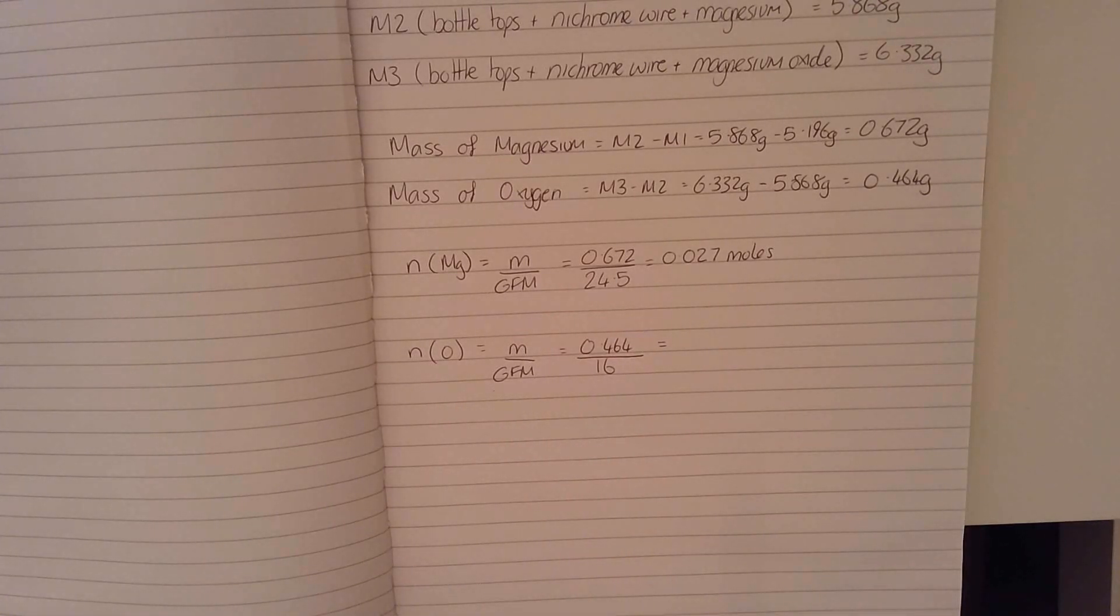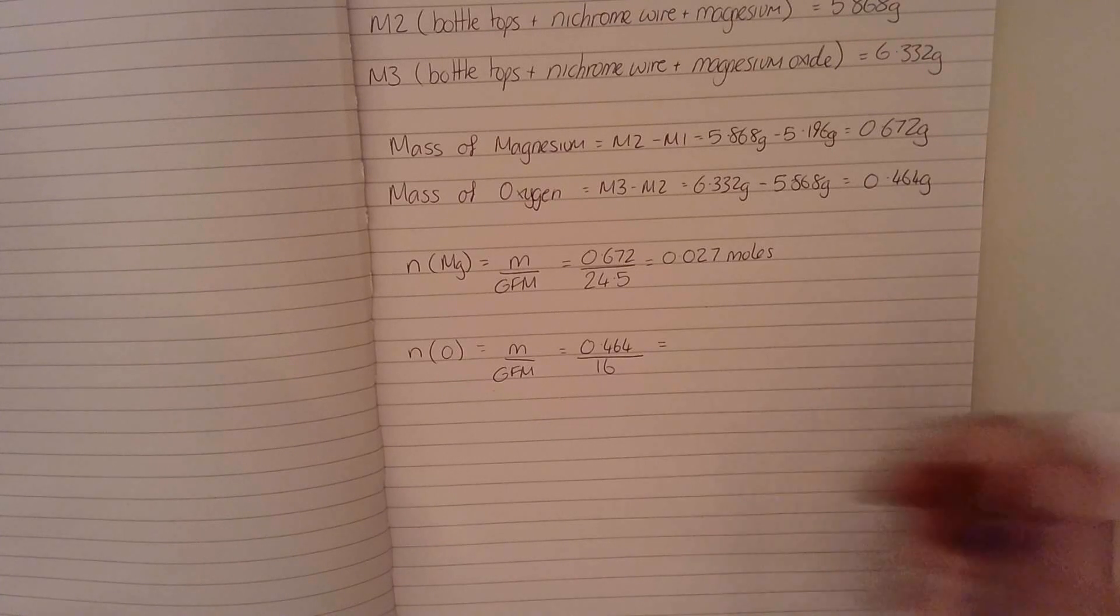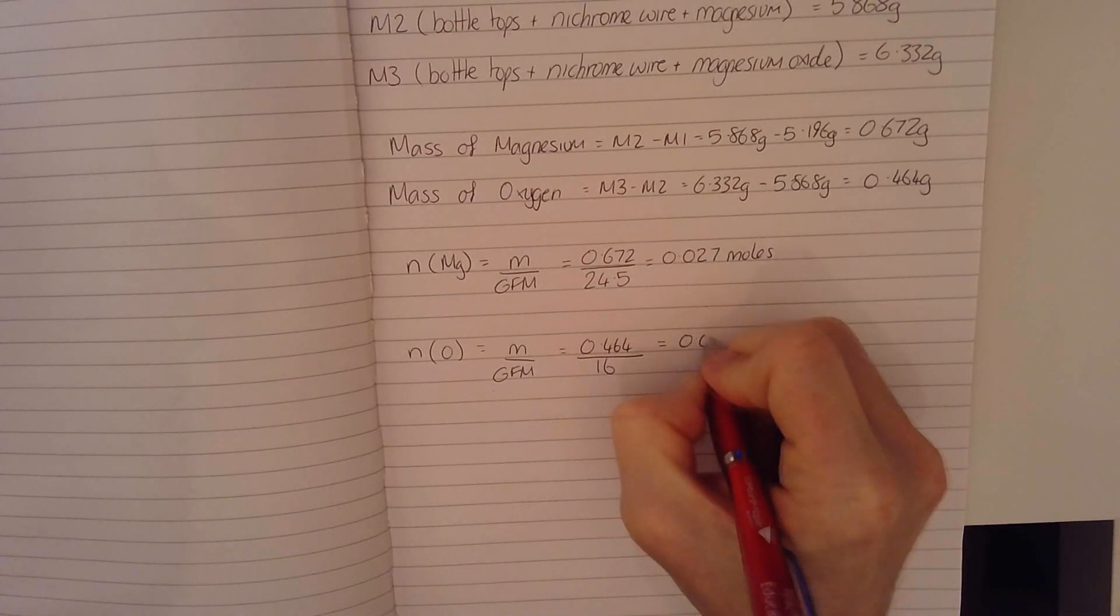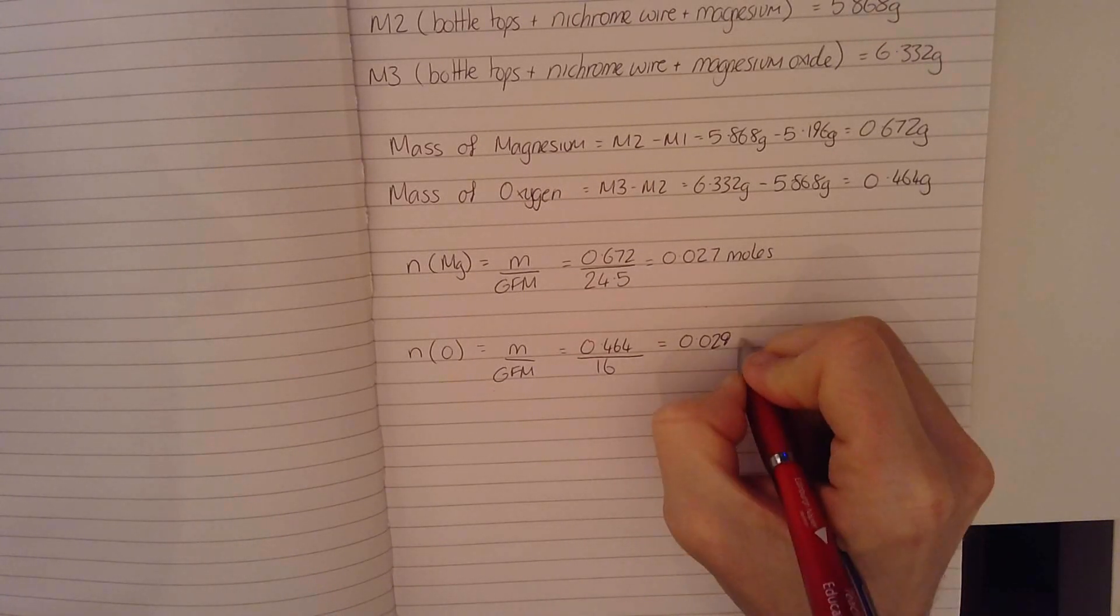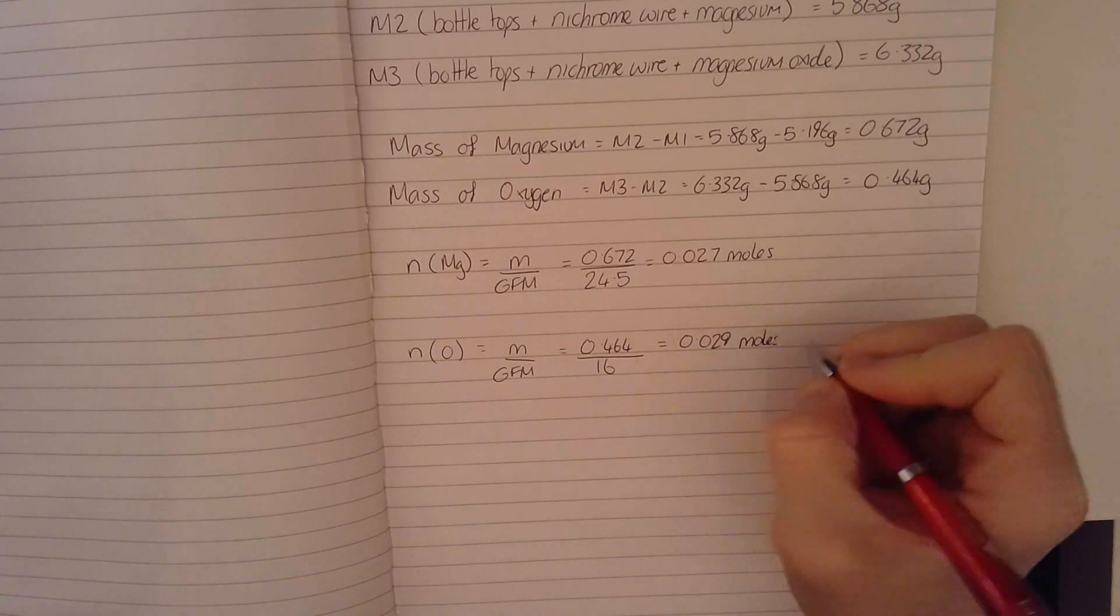So if I plug those numbers into the calculator, I find I have got 0.029 moles of oxygen.